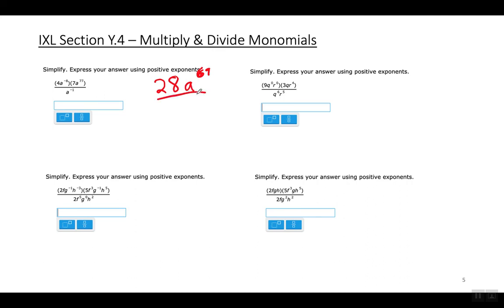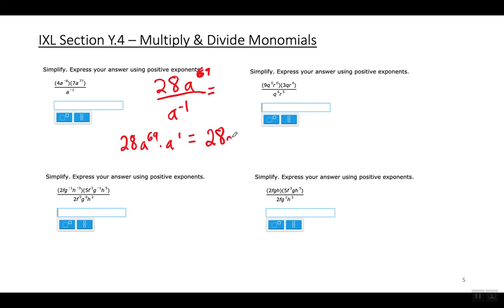On the bottom there's a to the negative first power. Move it to the top, making it a to the first power — moving to the numerator removes the negative sign. Then add the exponents of the a's: 69 plus 1 equals 70. Wait — the final answer is 28a to the seventy-eighth power.